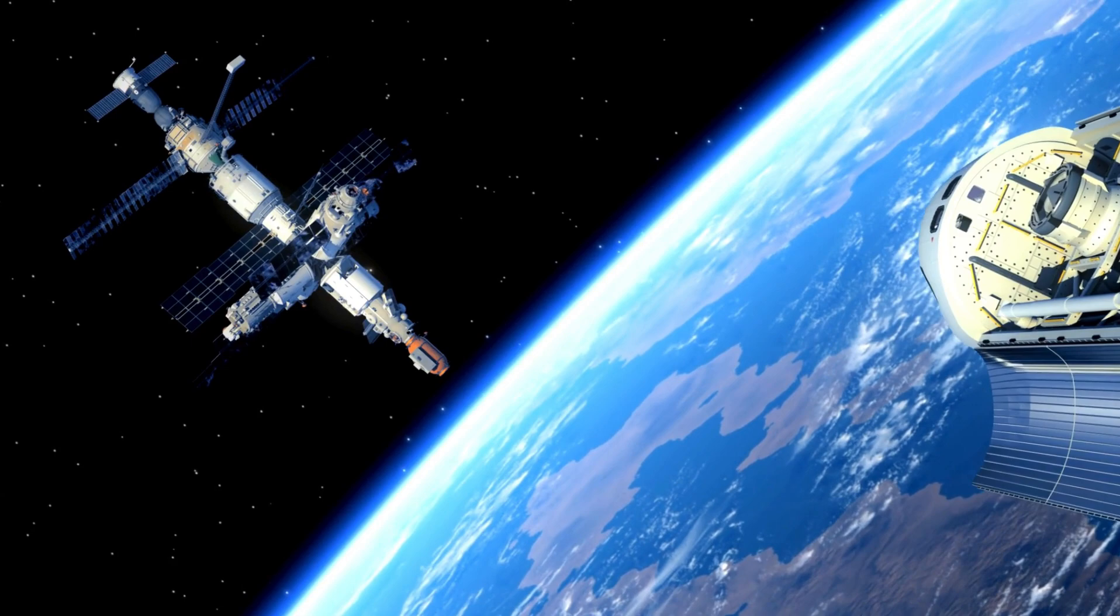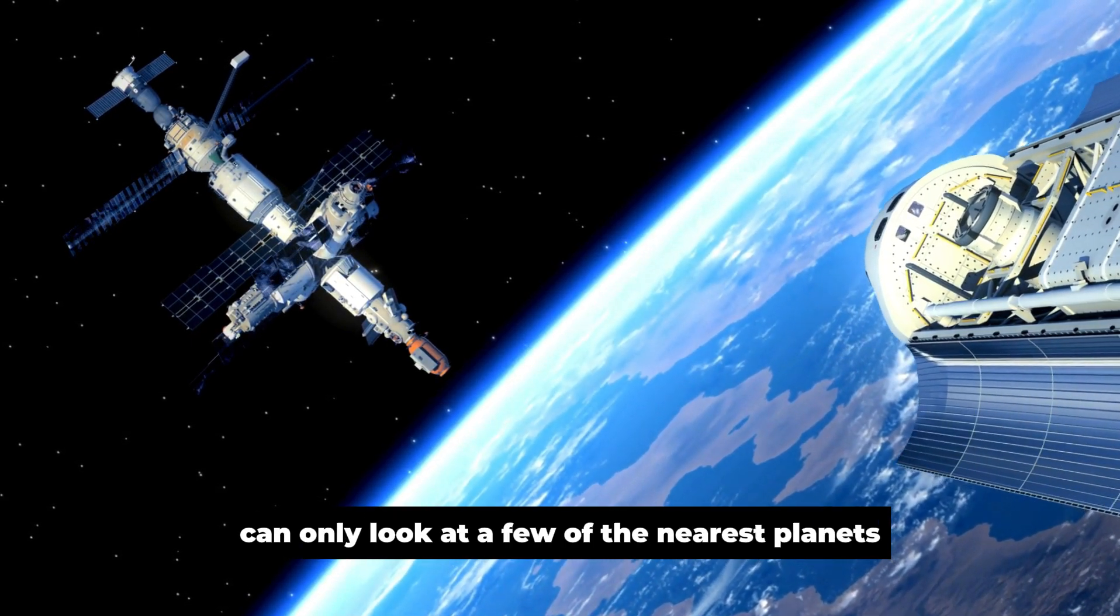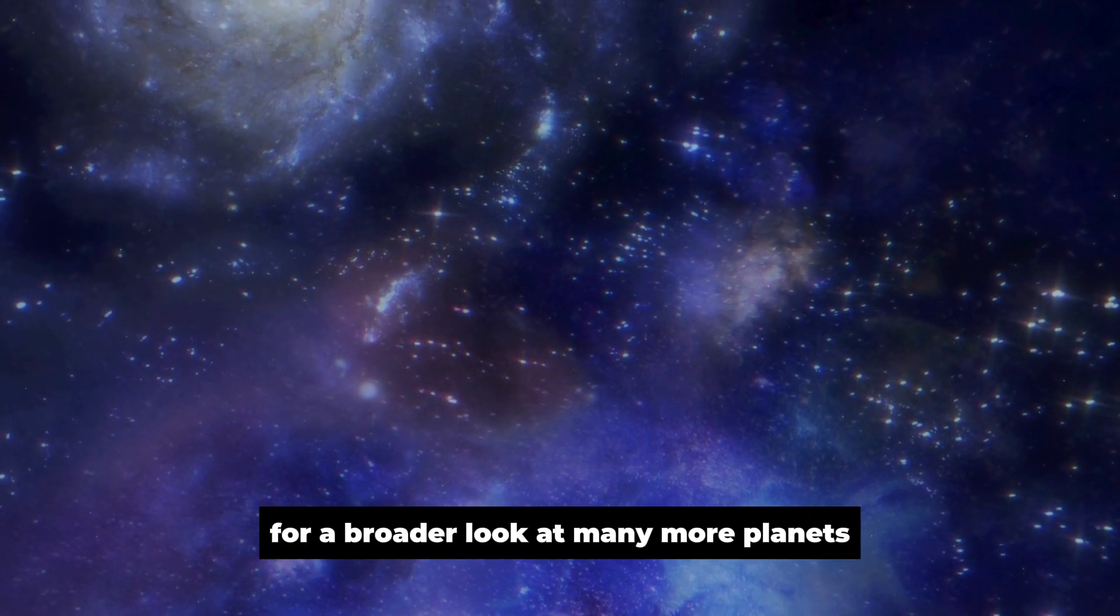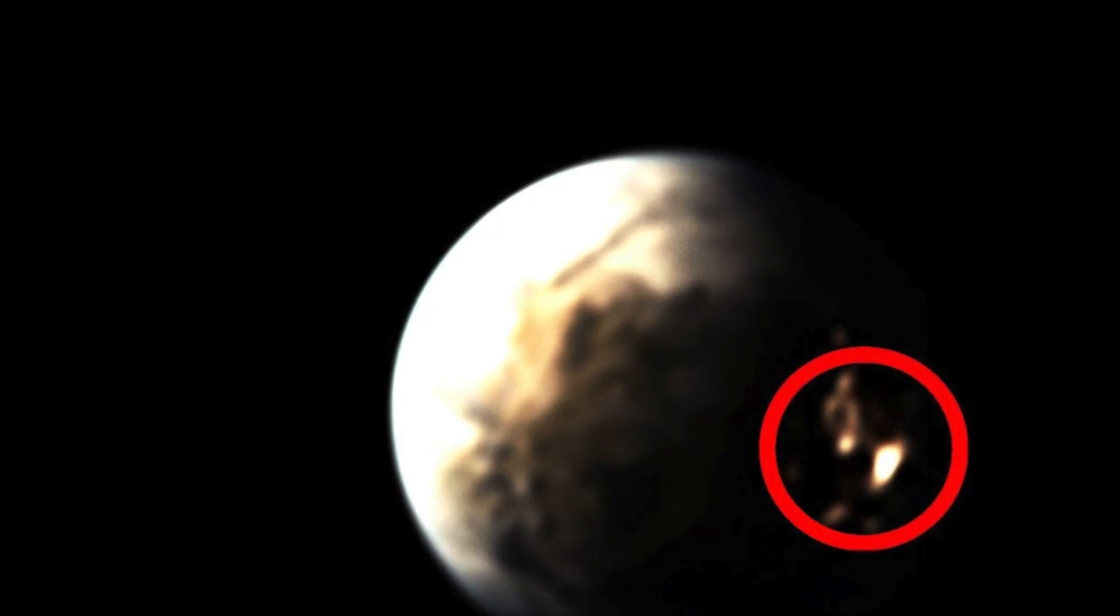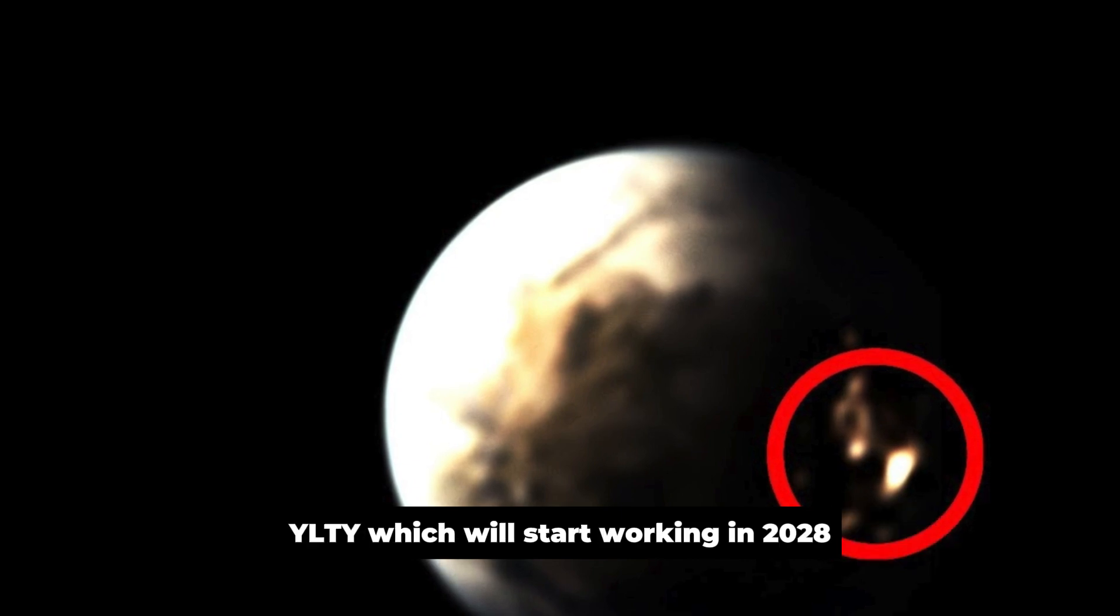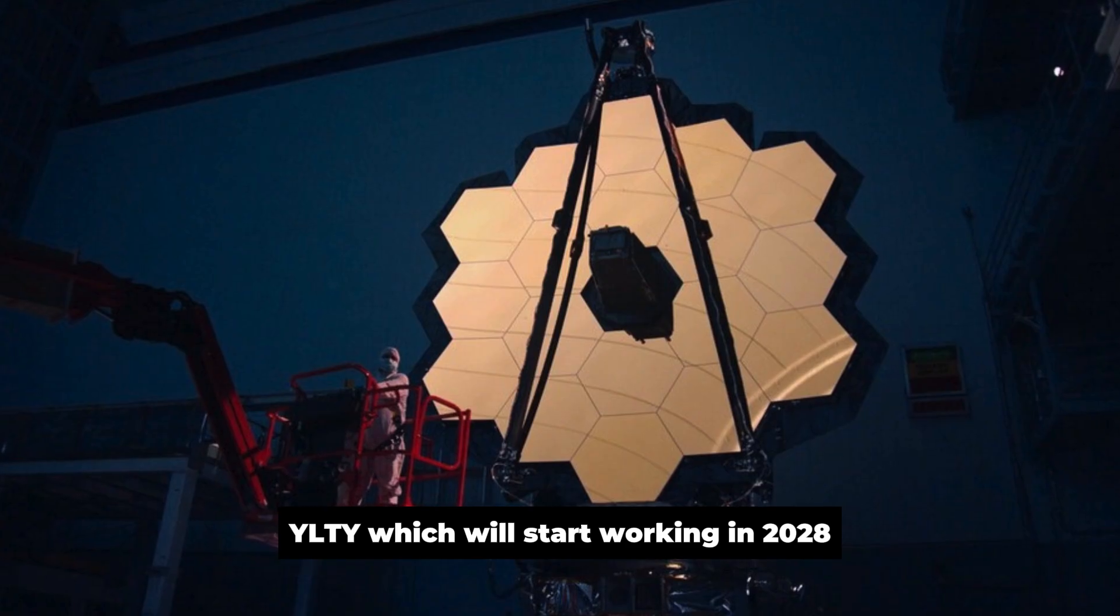But here's the catch. The James Webb Space Telescope can only look at a few of the nearest planets that might be habitable. For a broader look at many more planets, scientists are eagerly waiting for the Extremely Large Telescope, ELT, which will start working in 2028.